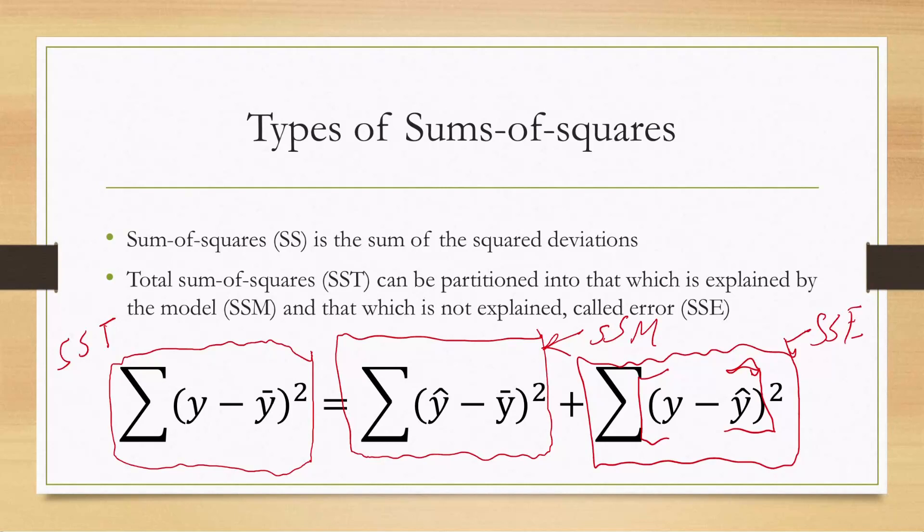SS_model plus SS_error equals the total sums of squares — the total variation about the mean. This whole process of understanding why we have variation introduces one reason: variation in mortality is in part due to latitude. How much is due to latitude is captured in SS_model, and how much is not due to latitude is captured in SS_error — the squared and summed residuals.